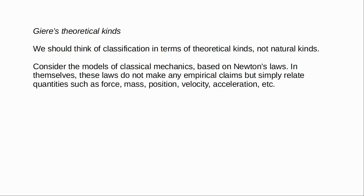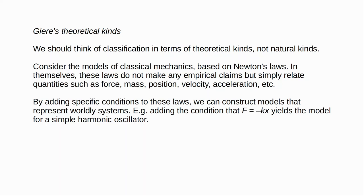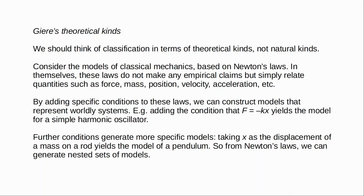We construct more specific models by adding specific conditions to the laws. For example, if we add to Newton's laws the condition f = −kx, where k is a positive constant and x is displacement from an equilibrium position, this yields a model for the simple harmonic oscillator. We make it more specific still by adding yet further specifications — for example, taking x as the displacement of a mass on a rod gives the model of a simple pendulum. Models of other oscillating systems, like bouncing springs and vibrating strings, can be derived by adding different specifications to the simple harmonic oscillator model.